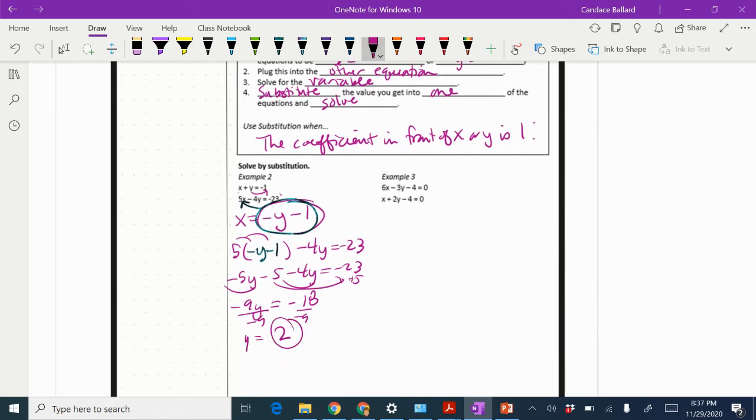I'm now going to take that 2 and I'm going to substitute it into this original first equation. Actually, I could substitute it in here if I wanted because it's already solved. So I know that x equals negative 2 minus 1, which means that x equals negative 3.